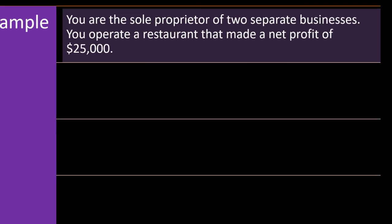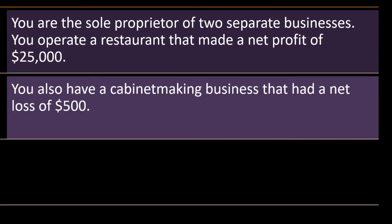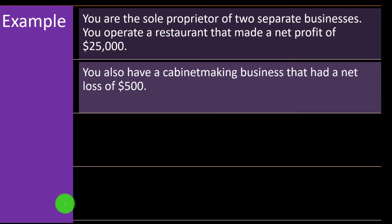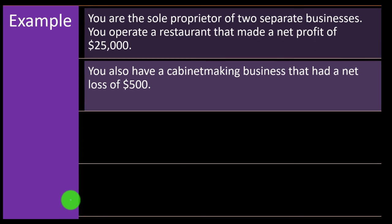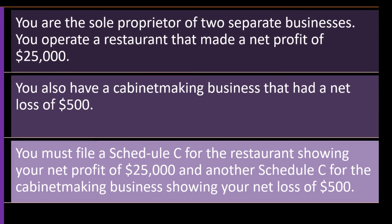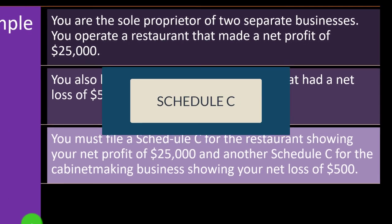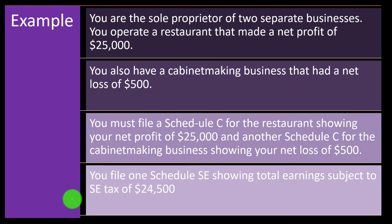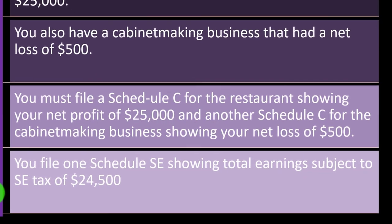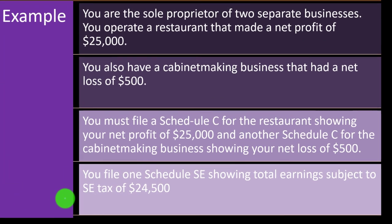Example: You are the sole proprietor of two separate businesses. You operate a restaurant that made a net profit of $25,000 and a cabinet-making business that had a net loss of $500. You must file a Schedule C for the restaurant showing net profits of $25,000 and another Schedule C for the cabinet business showing a net loss of $500. You will file one Schedule SE for both businesses, showing total earnings subject to SE tax of $24,500.